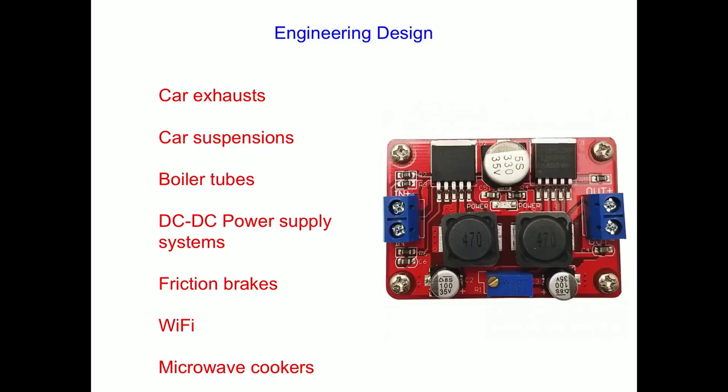In engineering design this again is exactly what I do my research in. The chaos theory has many applications. It helps us understand car exhaust patterns, car suspensions, tubes in a boiler, all the way down to improving microwave cookers. If you have a microwave cooker which uses a chaotic source for its energy rather than a regular one you get much more even cooking. So, all of these are areas I do my own research in.